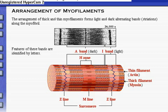The region of the myofibril between two successive Z-lines is called a sarcomere. It is the contractile unit of a muscle cell. You will see how a muscle cell contracts in a later topic: the sliding filament theory.